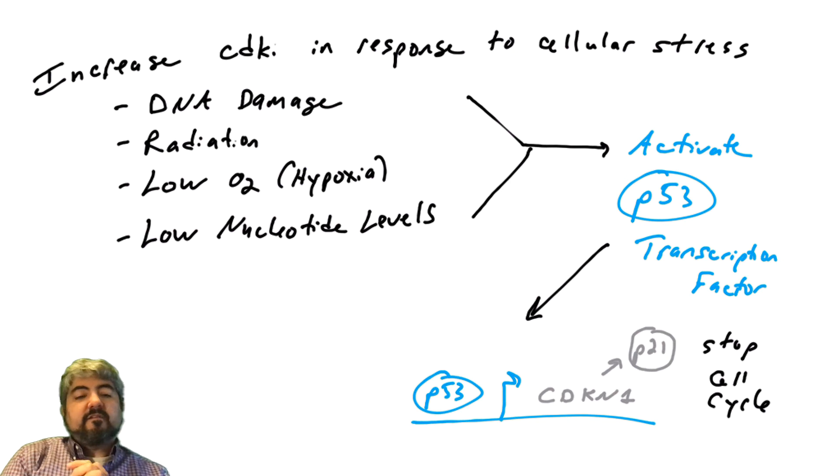Another very oftenly talked about pathway that regulates CDK inhibitors is the P53 pathway. P53, a major tumor suppressor that is mutated in virtually all human cancers, either mutated or dysregulated in all human cancers. P53 is a transcription factor that can bind the promoter of the gene that codes for P21.